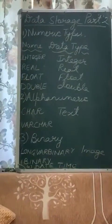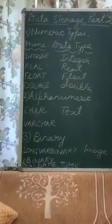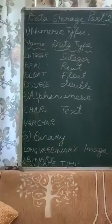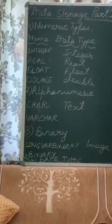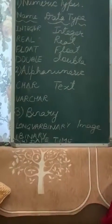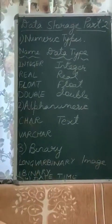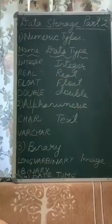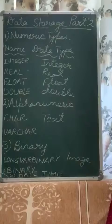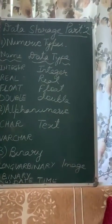The next one is binary data type. Binary data types are used for storing data in binary formats — for example, photos and music files. Here you use LONGVARBINARY, spelled L-O-N-G-V-A-R-B-I-N-A-R-Y, for storing any image. You use BINARY for storing any array of bytes.